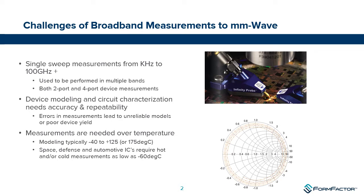These measurements are quite often needed over temperature as well. Typically device modeling needs to be measured from minus 40 degrees Celsius to 125 degrees Celsius, and in some automotive applications up to 175 degrees Celsius. So measurements have to be made over a very broad temperature range as well as a very wide bandwidth. Devices going into space, defense, or automotive applications will also require hot and/or cold measurements, because those are the conditions they'll operate in — whether in an engine, a car, or the cold of space.